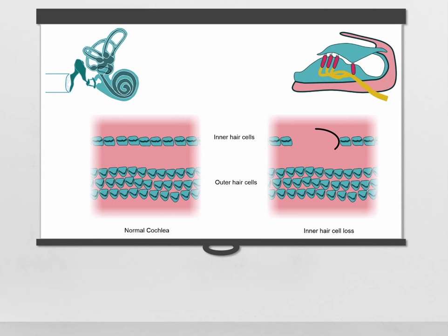A cochlear dead region is defined as a region of the cochlea where there are no functioning inner hair cells and/or neurons.